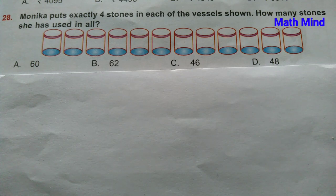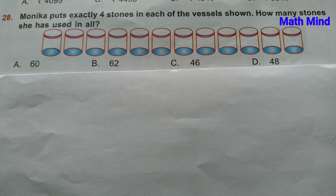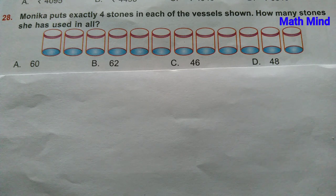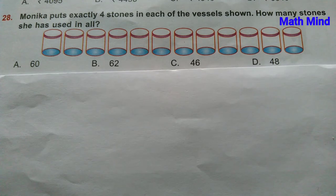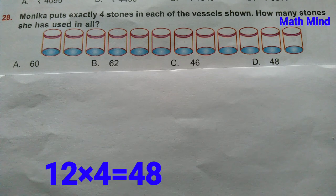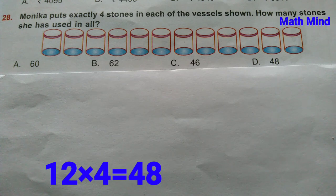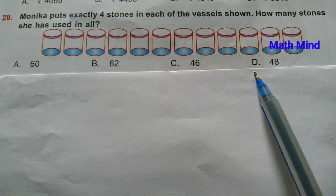Question number 28: Monika puts exactly 4 stones in each of the vessels shown. How many stones has she used in all? Counting number of vessels: 12. She puts 4 stones in each vessel. Total stones: 12 into 4 equals 48. Option D is correct.